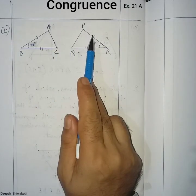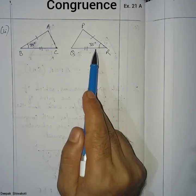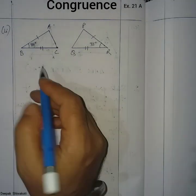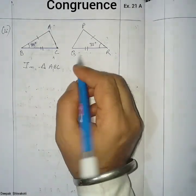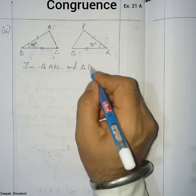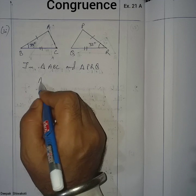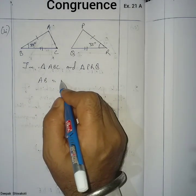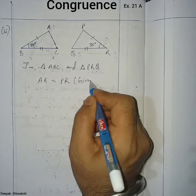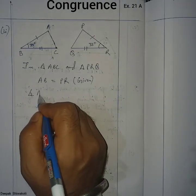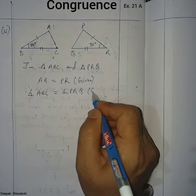These are corresponding sides, corresponding angles, and corresponding sides. So we write: In triangle ABC and triangle PRQ, line segment AB is equal to line segment PR — corresponding sides, given in the figure.